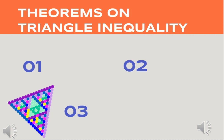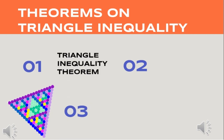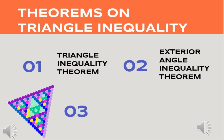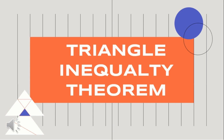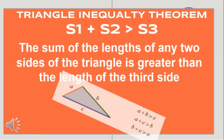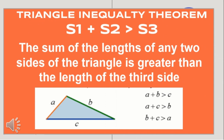Do you still remember the three theorems on triangle inequality? First, we have the triangle inequality theorem. It consists of three theorems: S1 plus S2 is greater than S3; the longest side and the shortest side are opposite the larger angle and smallest angle (SS implies AA); and a larger angle and the smallest angle are opposite the longest side and the shortest side (AA implies SS). The second theorem is the exterior angle inequality theorem. The third one is the hinge theorem.